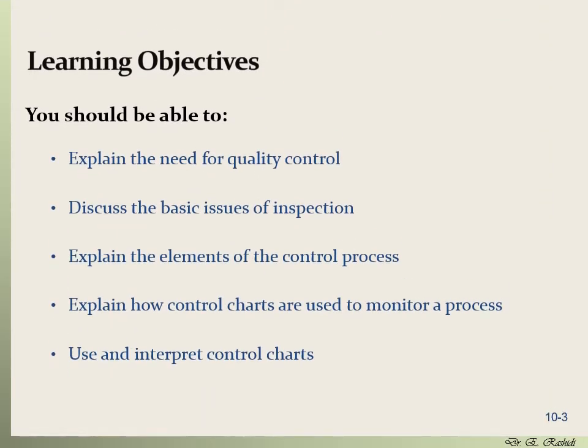The learning objectives for this chapter are as follows. By the end of this chapter you will learn about quality control — what it is and why we need it. You will learn about inspection: the basic issues such as where to perform it and how often. You will learn about the control process and tools such as different charts and statistical methods, and you will be able to use and interpret control charts.